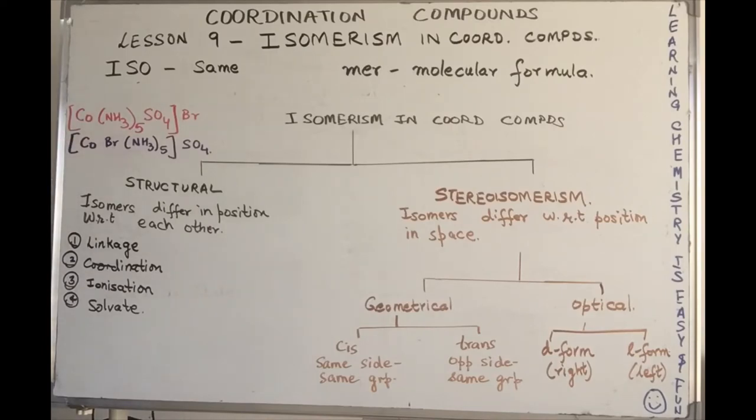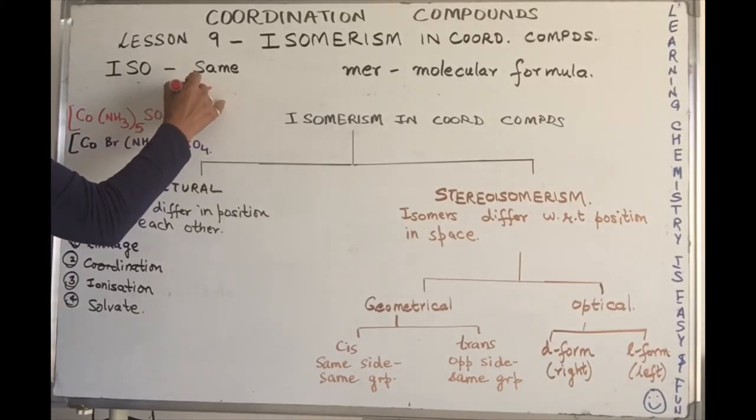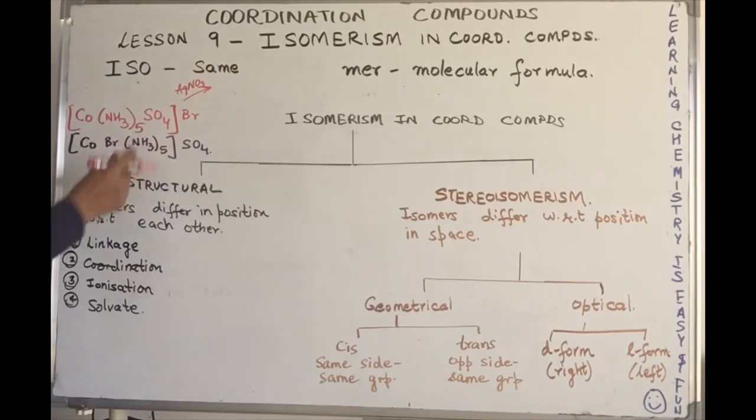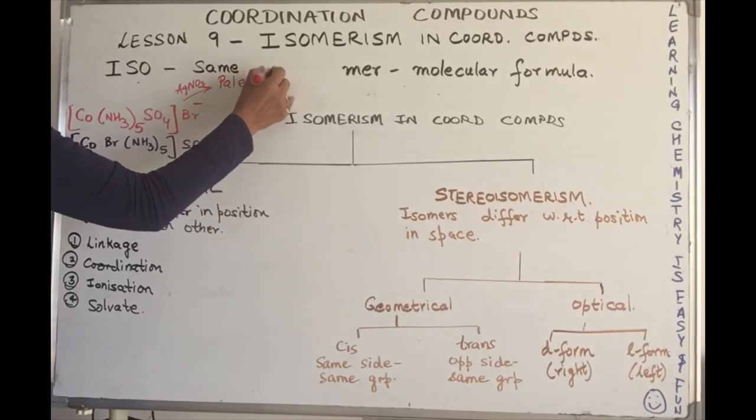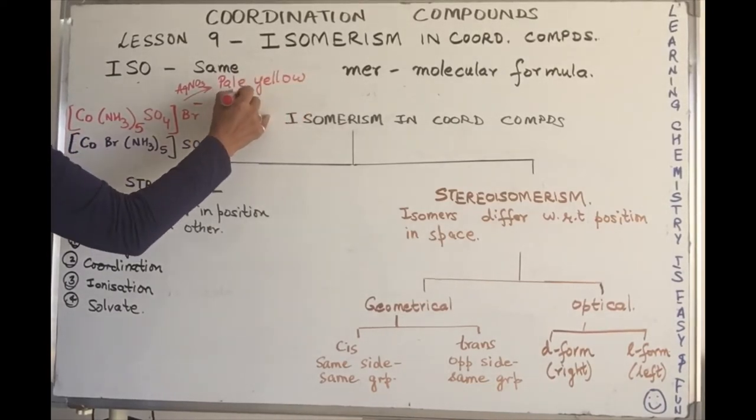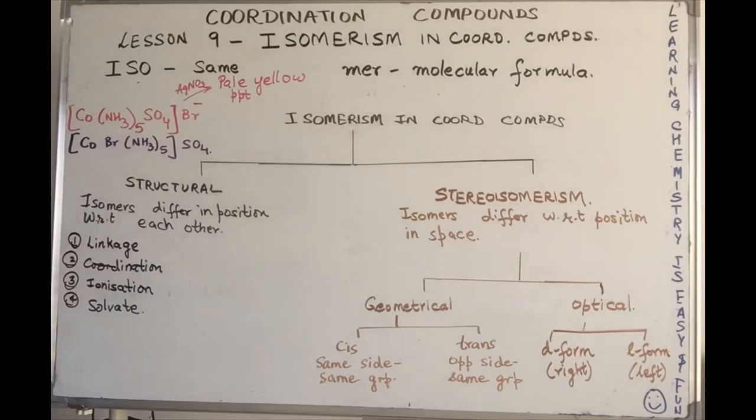Both these molecules behave differently. Their properties are different. That's why I've written them in different colors as well. This is a reddish compound whereas this is purple in color. If you treat the first compound with silver nitrate, bromide is an ion, it's ionizable, so it gives you a pale yellow precipitate of silver bromide which is soluble in excess of ammonium hydroxide.